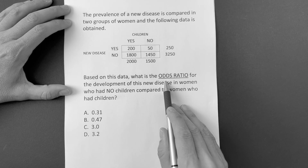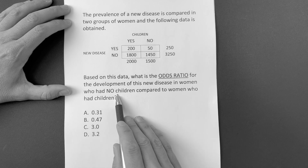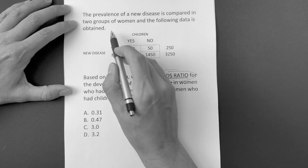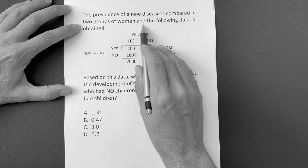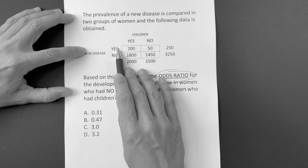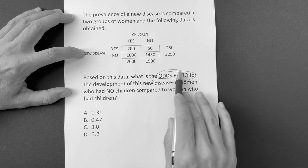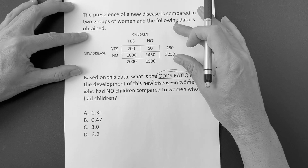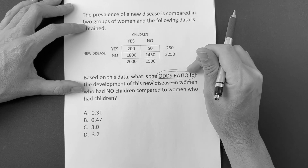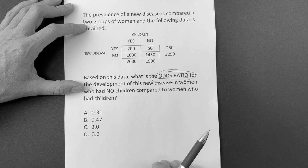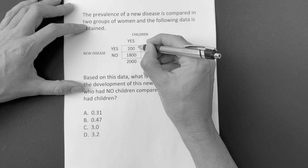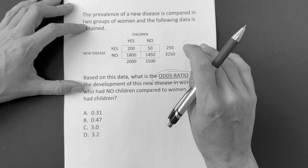The question says: based on this data, what is the odds ratio for the development of this new disease in women who had no children compared to women who had children? They're asking odds ratio. It says the prevalence of the new disease was compared between two groups of women — women who had children and women who didn't — giving you a two-by-two table. The key is which number do you put on top versus bottom, and you can't just memorize those formulas from First Aid and assume a fixed box layout.